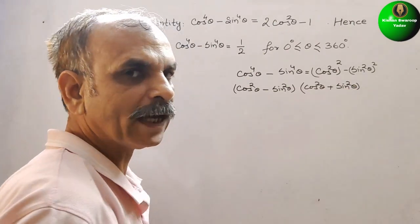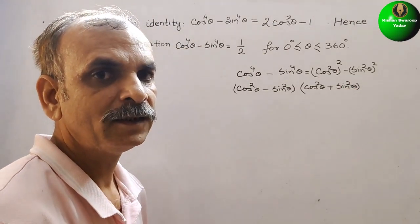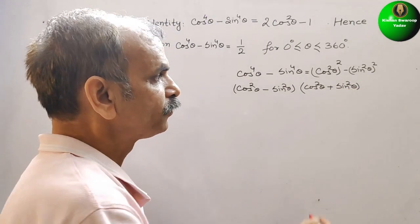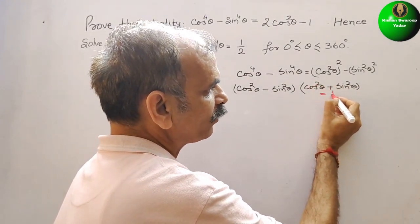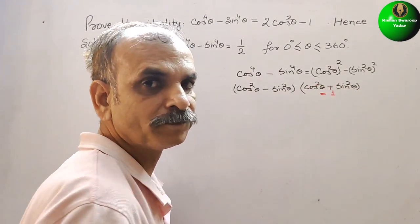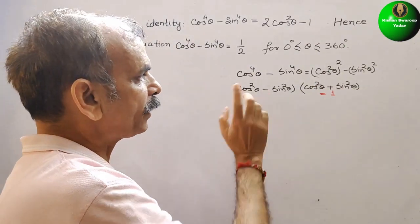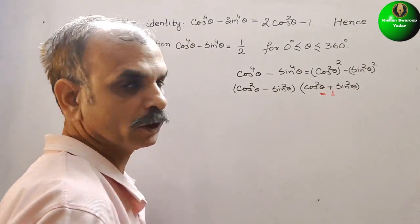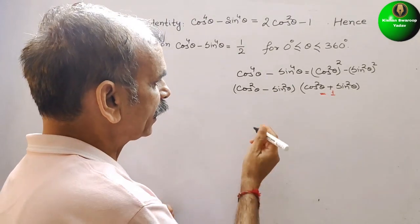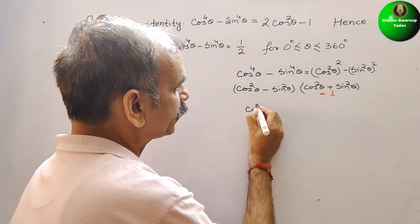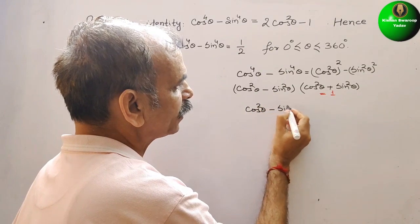We know that one identity is there: cos square theta plus sin square theta equals 1. So just multiplying it, we will get cos square theta minus sin square theta.